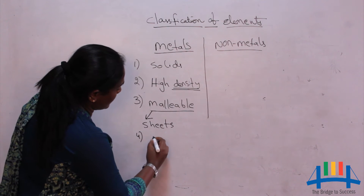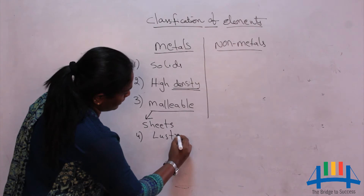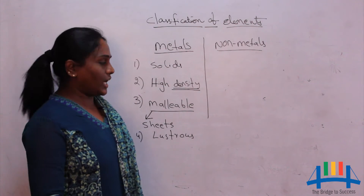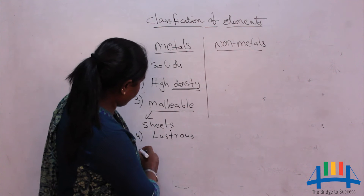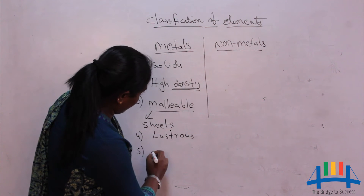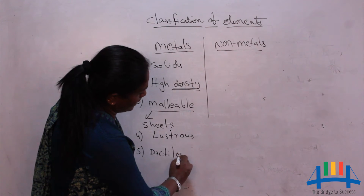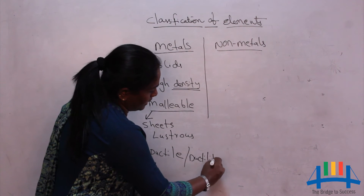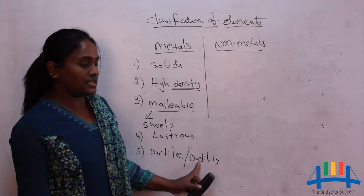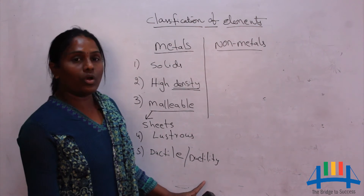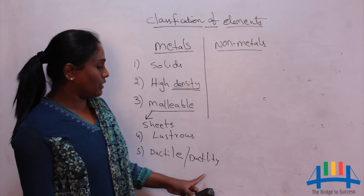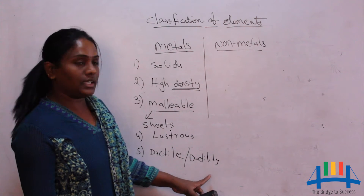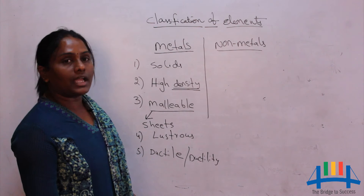Metals are also lustrous, meaning they are shiny in nature. Additionally, metals are ductile. Ductility is the property of a metal where it can be drawn into wires. Any metal which can be drawn into wires exhibits ductility, and that property of metals is called ductility or the metals are called ductile metals.